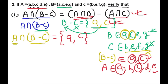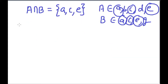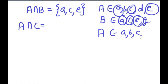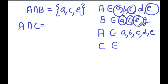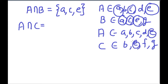Next, for A intersection C: Set A has elements {A, B, C, D, E} and Set C has elements {D, E, F, G}. The common elements between A and C are E. So A intersection C = {E}.